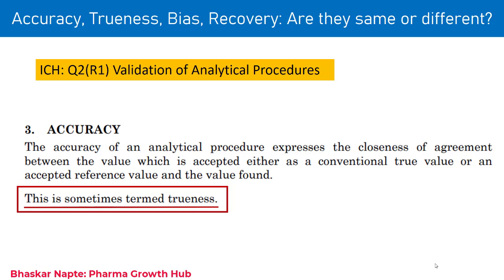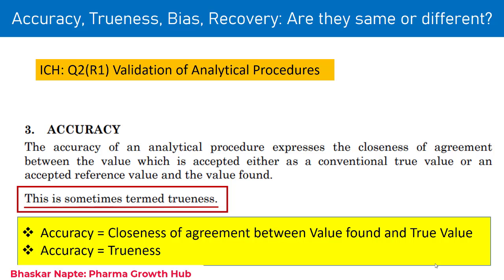The accuracy of an analytical procedure expresses the closeness of agreement between the value which is accepted either as a conventional true value or an accepted reference value, and the value found. Sometimes accuracy is also termed as trueness. So in essence, according to ICH Q2R1, accuracy is the closeness of agreement between the value you have found and the true value — which is the content of the analyte present in the sample, such as the amount of standard spiked into the sample.